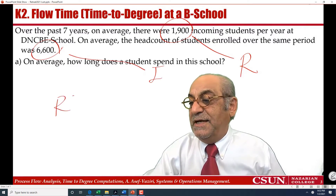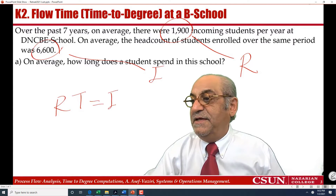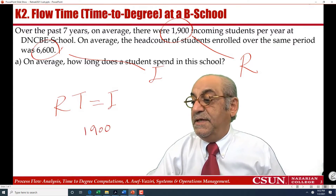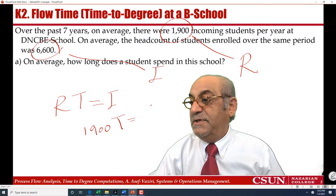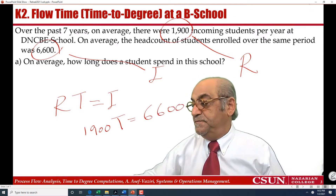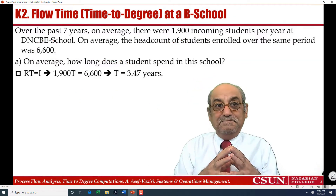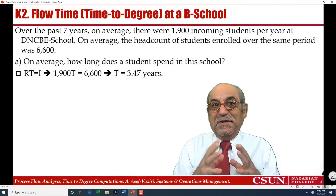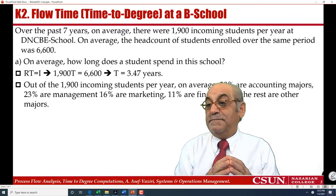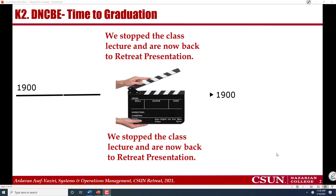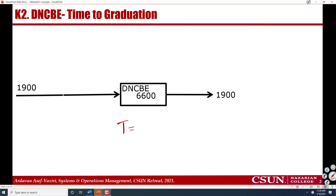Throughput times flow time is equal to inventory, and therefore 1,900 times flow time equals 6,600, giving us 3.47 years. After formulating the problem at the college level,